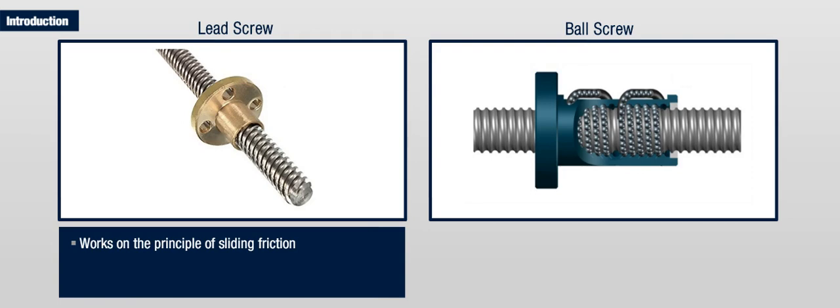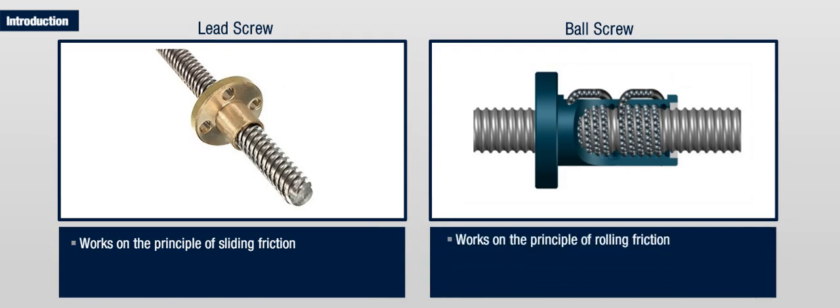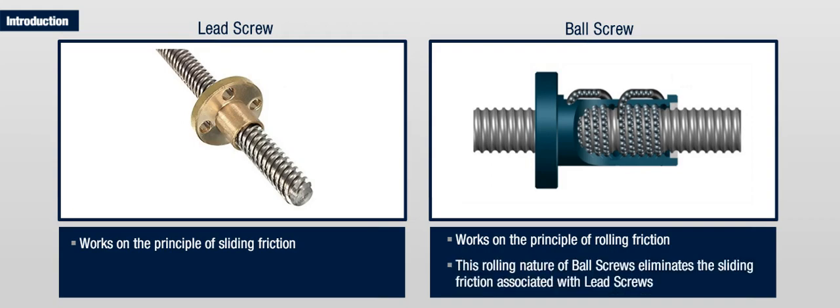However, in the lead screw, there is a metal to metal sliding frictional contact. Ball screws were thus developed to overcome this limitation. A ball screw works on the principle of rolling friction, as compared to a lead screw which works on sliding friction. This rolling nature of ball screws eliminates the sliding friction associated with lead screws.